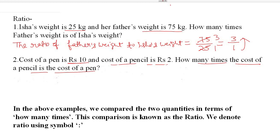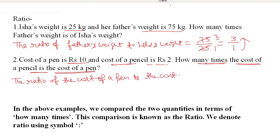The second question: the cost of a pen is rupees 10 and the cost of a pencil is rupees 2. How many times is the cost of a pen compared to the cost of a pencil? We write the ratio of the cost of a pen to the cost of a pencil: 10 upon 2. Simplifying — 2 ones are 2, 2 fives are 10 — gives 5 upon 1. So the cost of the pen is 5 times the cost of a pencil.